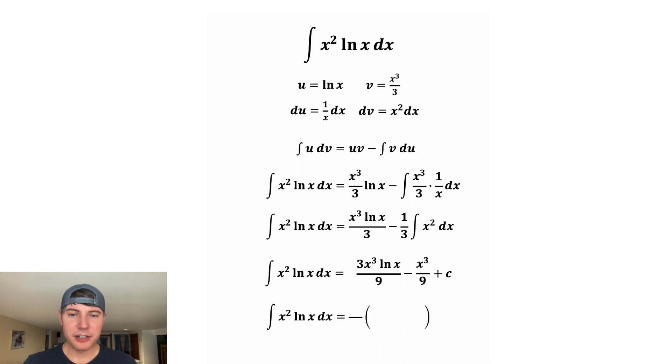And now we can pull out a GCF. Both of these have an x cubed in the numerator and a 9 in the denominator. So after we factor those things out, we're left with a 3 lnx. And then after we factor it out of this other term, we just have a 1. And then we don't want to forget the plus c. And here's another valid way to answer it. And this is a classic example for integration by parts. How exciting.